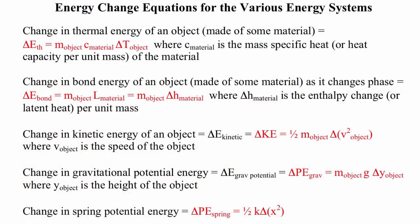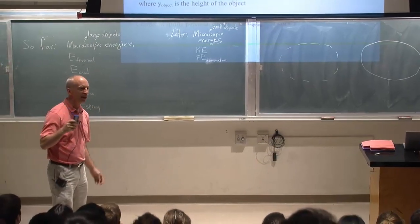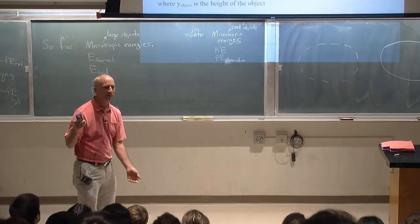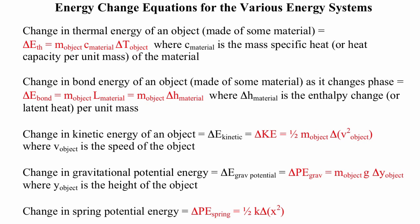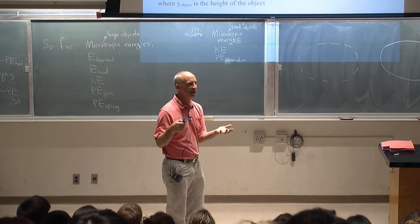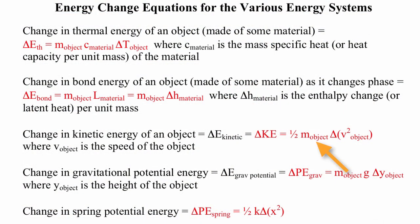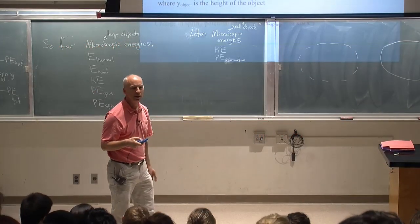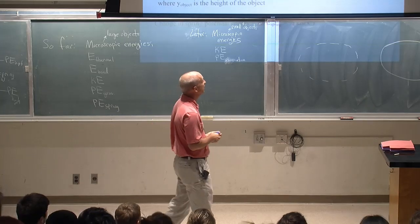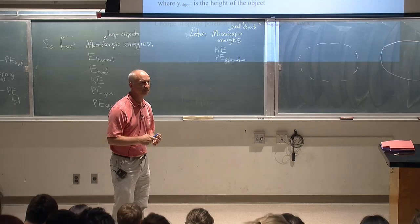Here are the equations for these. The change in thermal energy depends on the change in temperature; change in bond energy depends on latent heat. Kinetic energy depends on the speed — in fact, on the speed squared. The mass of our physical object is never going to change, so how does kinetic energy change? Only if the speed changes. It's changes in the square of the speed that tell you how much the kinetic energy changes. If you double the speed, the kinetic energy goes up by a factor of 4.